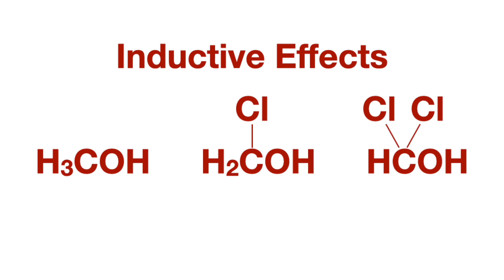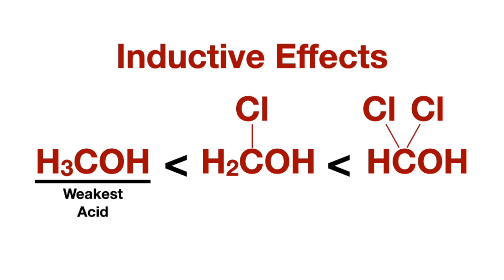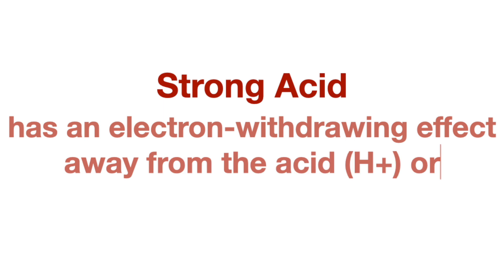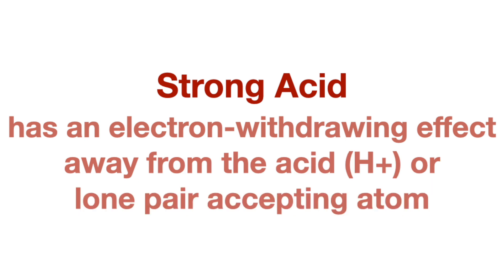Let's look at the first compound to see what makes it such a weak acid. The hydrogen is attached to an oxygen, which is attached to a carbon. The carbon is less electronegative than the oxygen, making it an electron-donating group, which means it donates electrons to the oxygen, making it even more partially negatively charged. This means the oxygen will be more likely to maintain the bond with the partially positively charged hydrogen, because opposites attract, making it less likely to release a proton into solution and therefore a weaker acid. So electron-donating effects result in a weak acid.